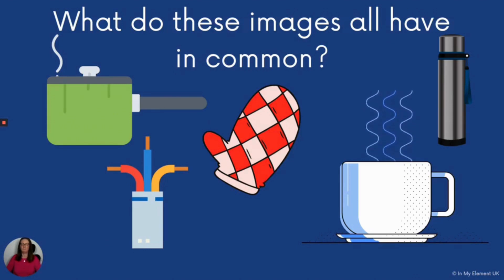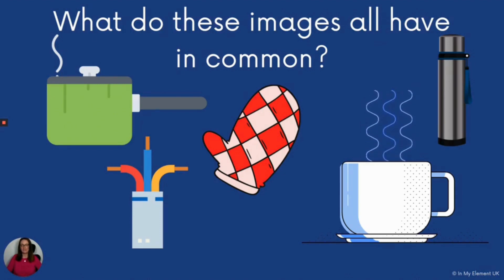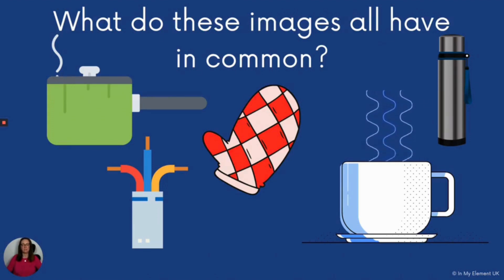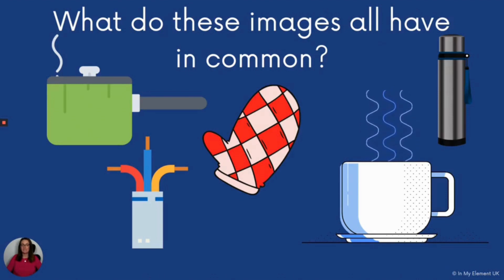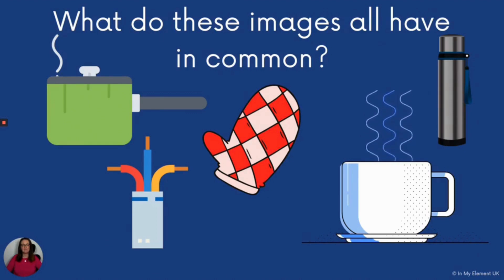All of them are insulators. The saucepan handle doesn't conduct the heat, which means it stays cool so we can touch it easily when removing it from the hob. The wires in the plug have an insulator so electricity won't pass through to someone touching those wires. The oven glove means you can pick up metal that may conduct heat, but the oven glove doesn't. The coffee cup is made of an insulating material to keep the heat in for as long as possible, and the same with the flask.